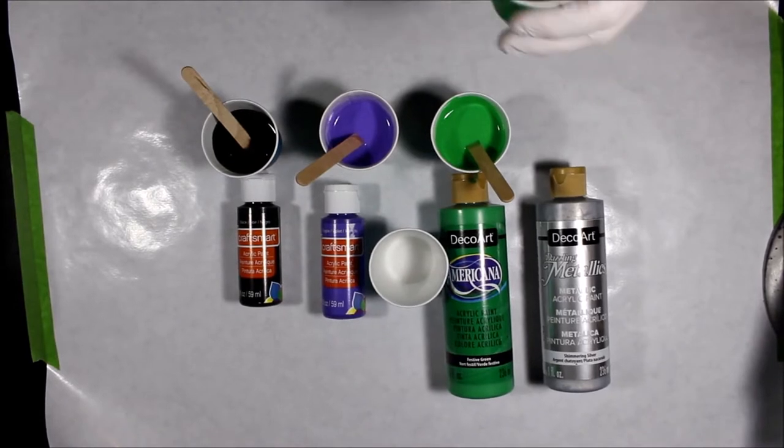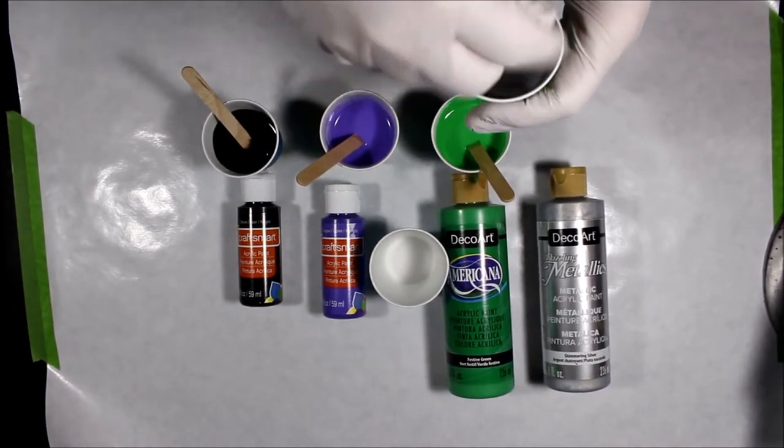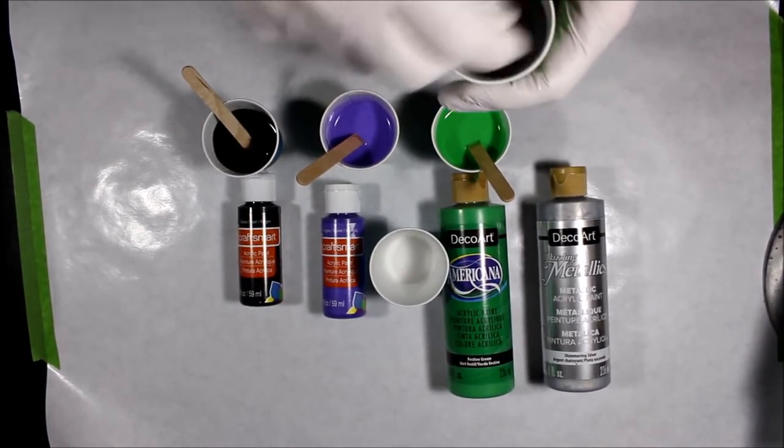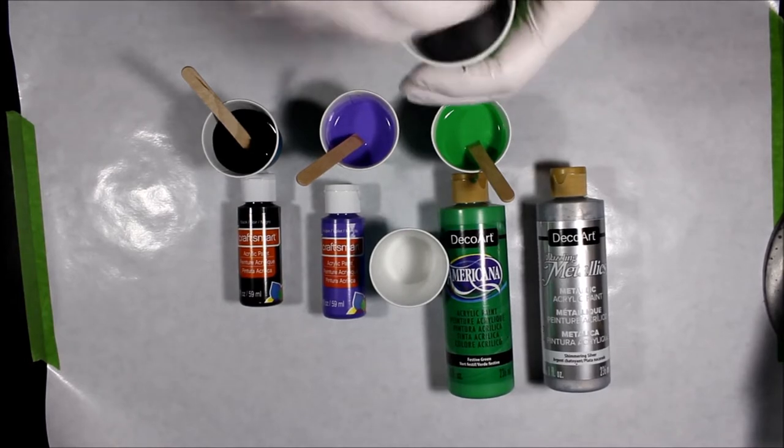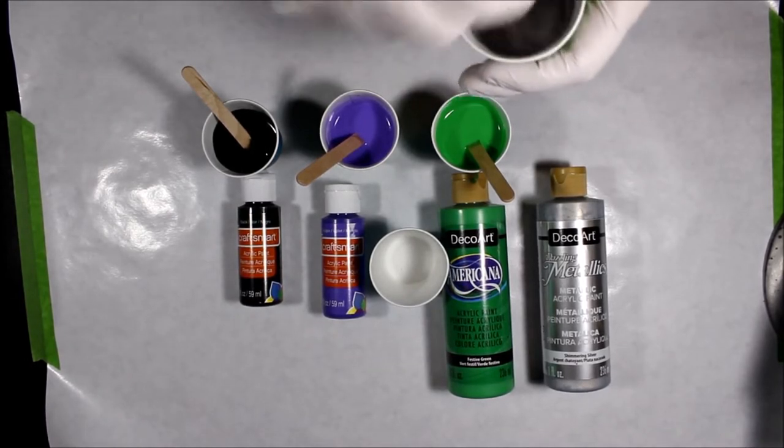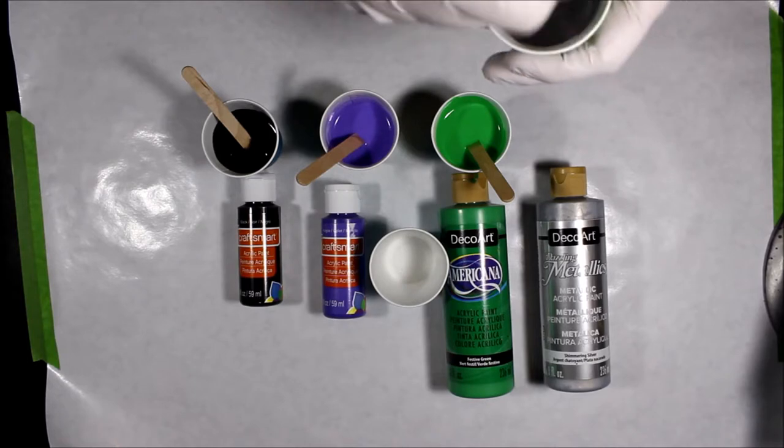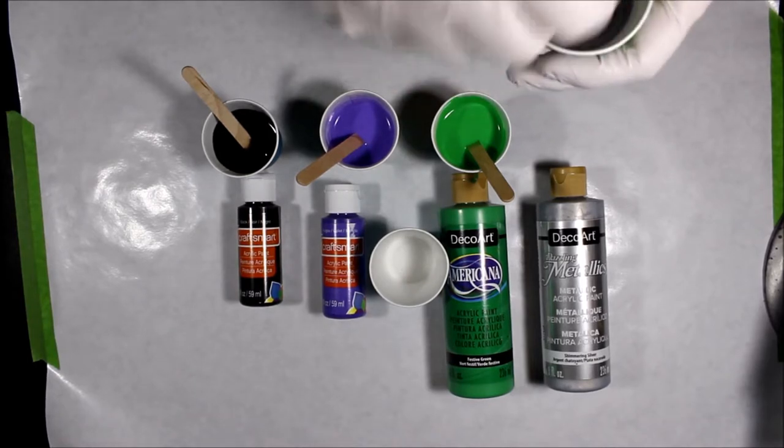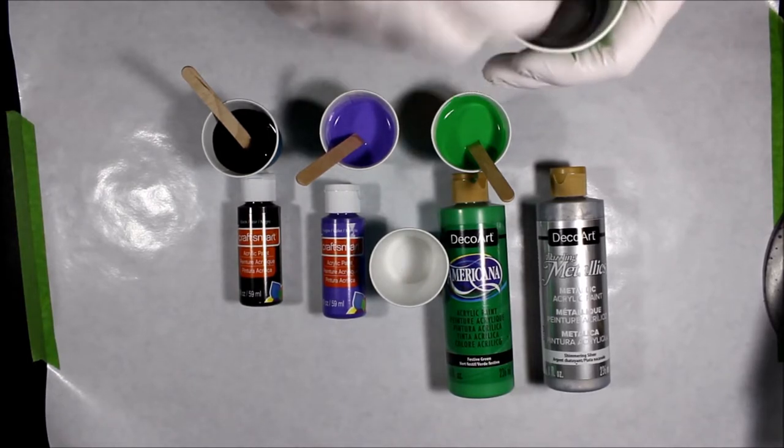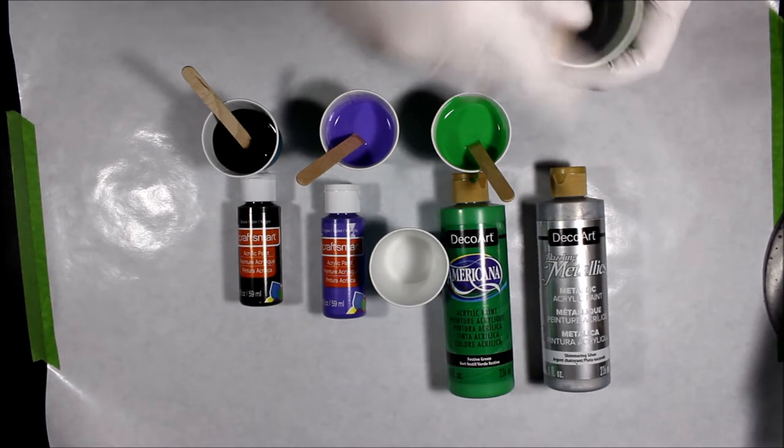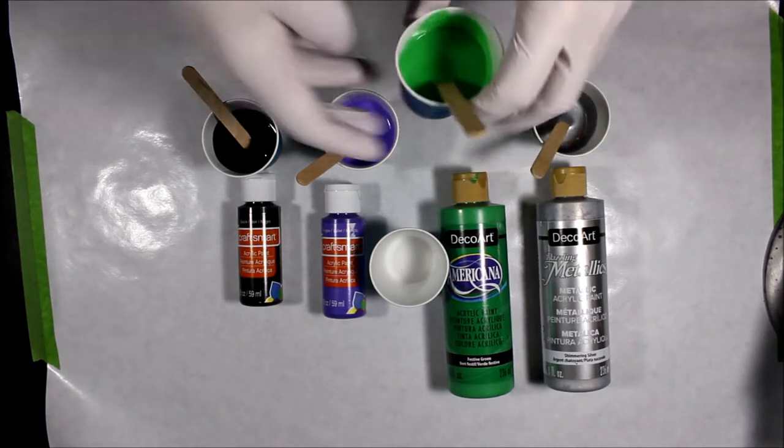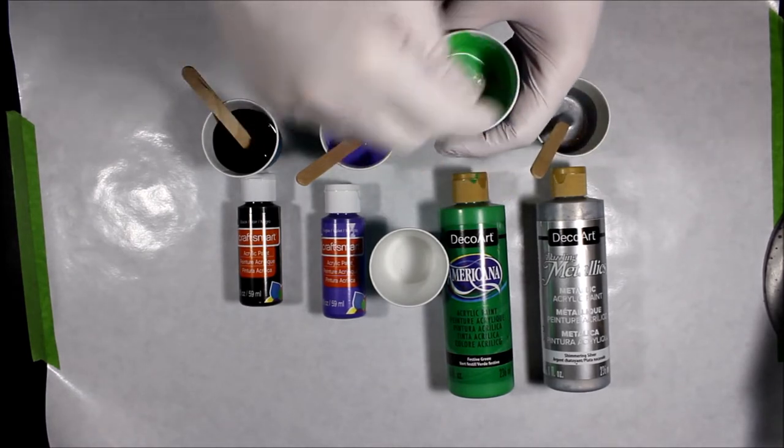Okay, so first things first, we got the colors I'm working with here. We got a metallic silver. We have festive green from Americana brand. We have just regular old purple from Craftsmart and regular old black also from Craftsmart. I'm just stirring a couple drops of silicone into all these. Then we're going to get started.